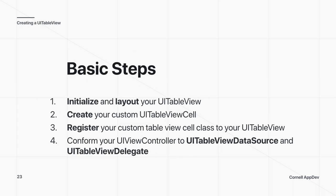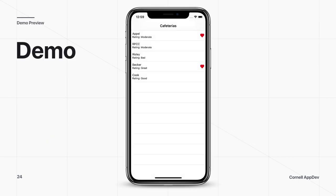To summarize the basic steps: first, initialize and lay out your UITableView. If using custom cells, create your custom UITableViewCell subclass and register it with tableView.register providing the reuse identifier. Then conform your view controller to UITableViewDataSource and UITableViewDelegate, and implement the required and relevant optional methods. The demo will show a generic table view displaying cafeterias as cells.